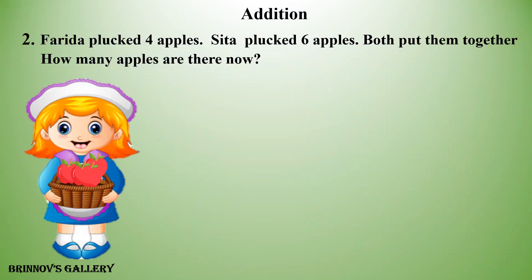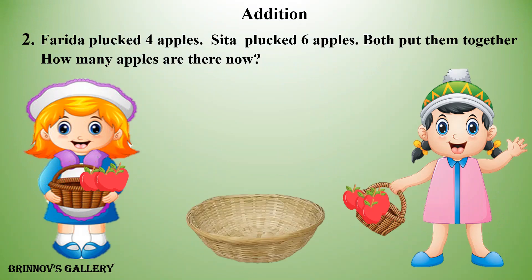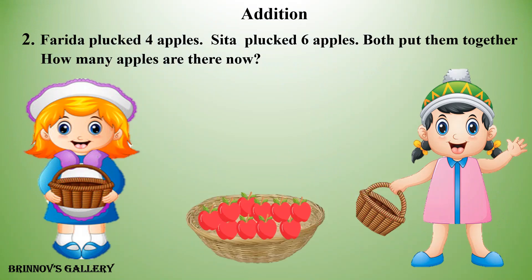Faridha plucked 4 apples. Sita plucked 6 apples. Both put them together. How many apples are there now? One, two, three, four, five, six, seven, eight, nine, ten. Ten apples are there now.